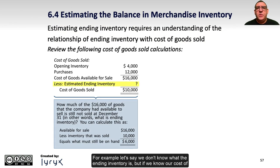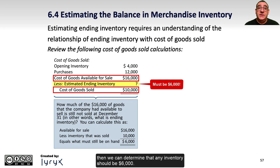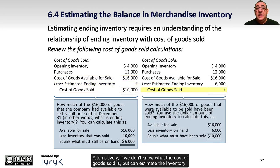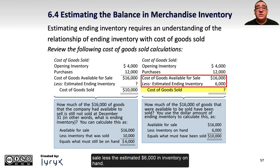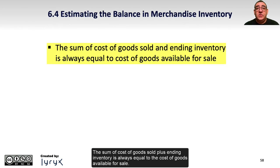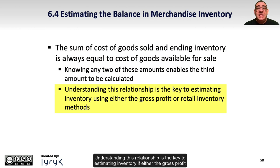For example, if we don't know what the ending inventory is, but we know our cost of goods available is $16,000 and the cost of goods sold is $10,000, then we can determine that ending inventory should be $6,000. Alternatively, if we don't know the cost of goods sold but can estimate the inventory on hand, we can determine the cost of goods sold as $10,000 based on the $16,000 available for sale less the estimated $6,000 in inventory on hand. The sum of cost of goods sold plus ending inventory is always equal to the cost of goods available for sale, so knowing any two of these amounts enables us to calculate the third. Understanding this relationship is the key to estimating inventory using the gross profit or retail inventory methods.